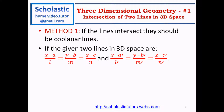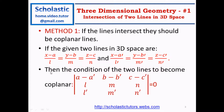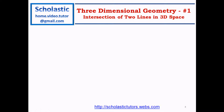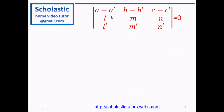So the condition for coplanar lines for two lines: we define a line as (x - a)/l = (y - b)/m = (z - c)/n, and the second line with dashed parameters. The condition for the two lines to become coplanar is that the determinant of the matrix with rows [a - a', b - b', c - c'], [l, m, n], [l', m', n'] should be equal to zero.